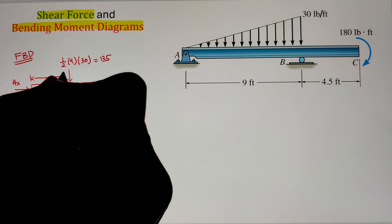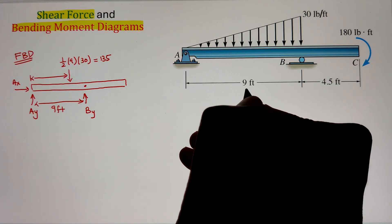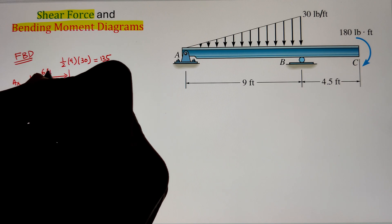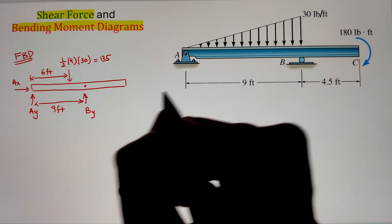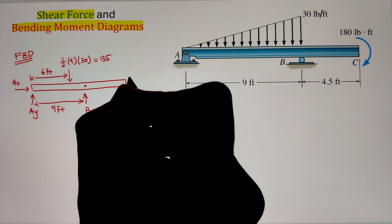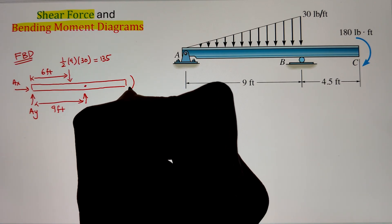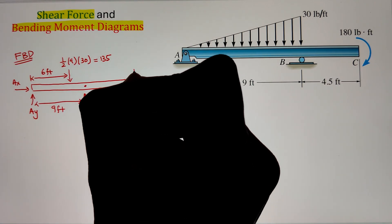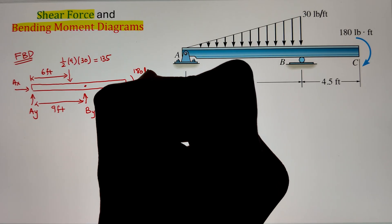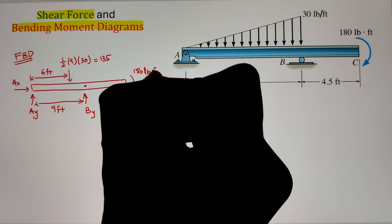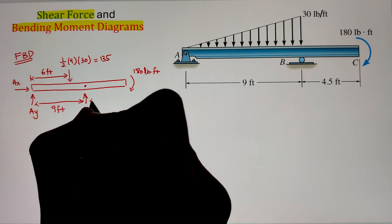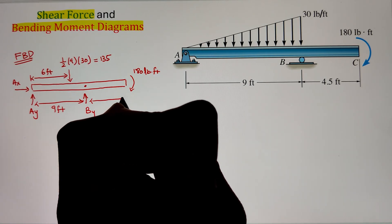This point load will be applied at the centroid of the triangle, that is two-thirds from the lower side of the triangle, equals to six feet. Finally, I have a couple moment of 180 pound-feet applied at point C.